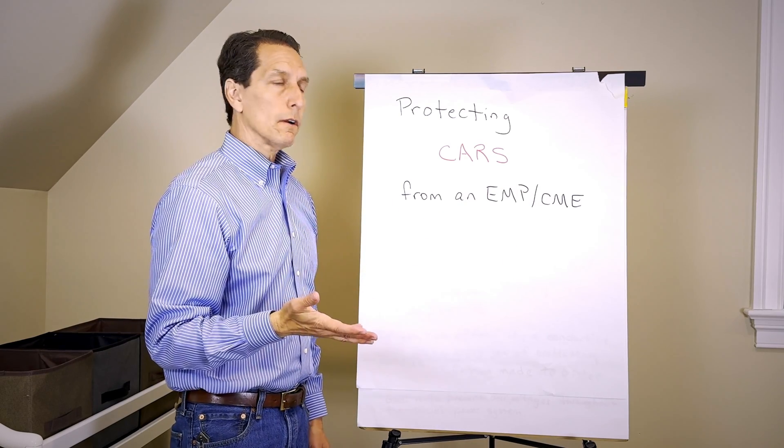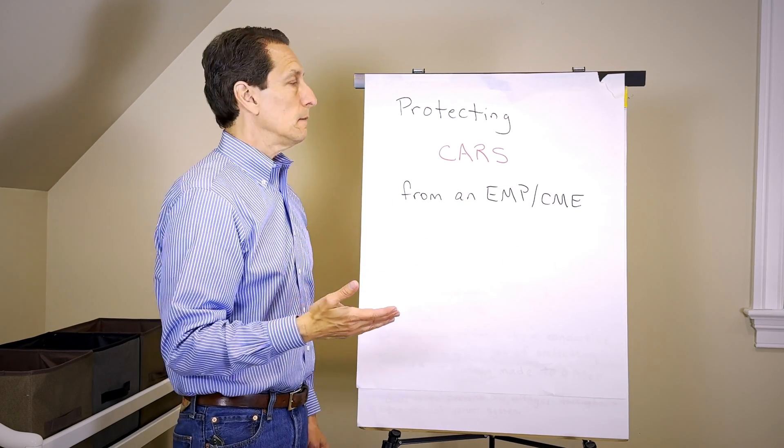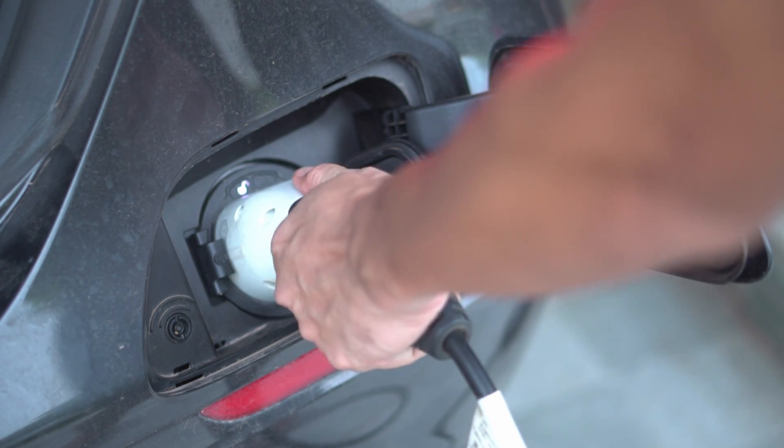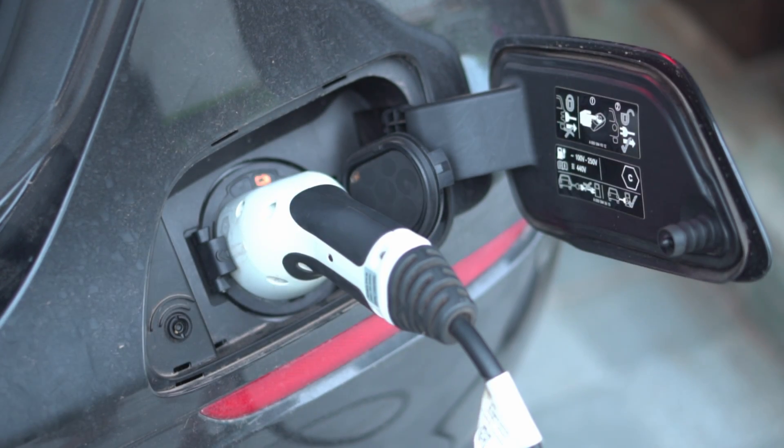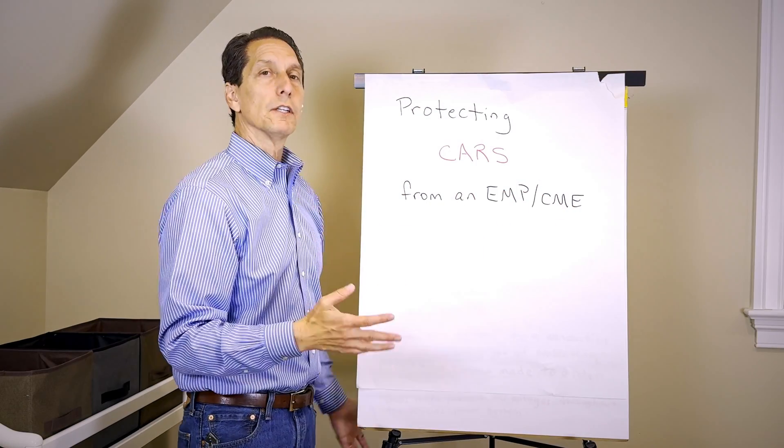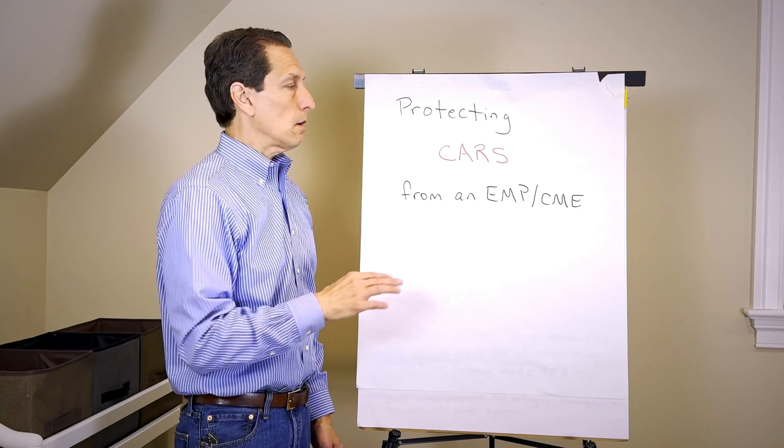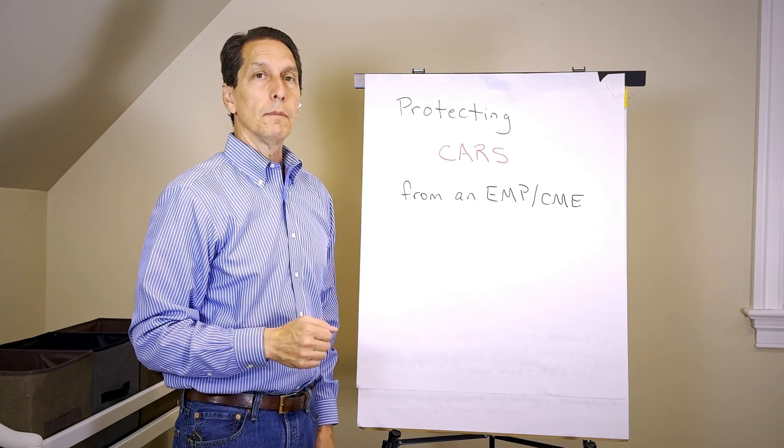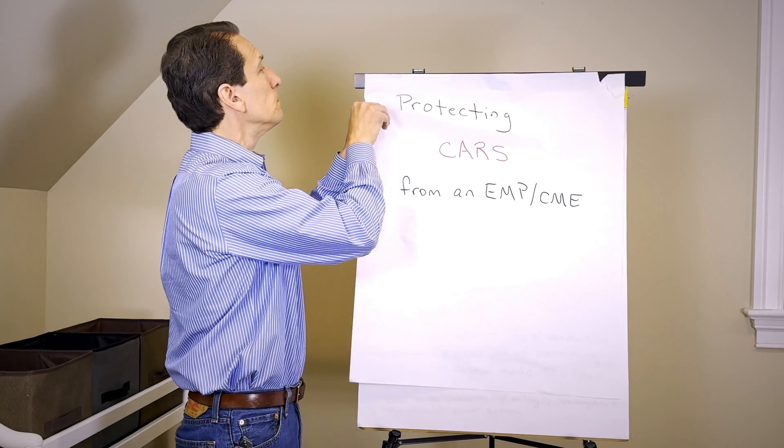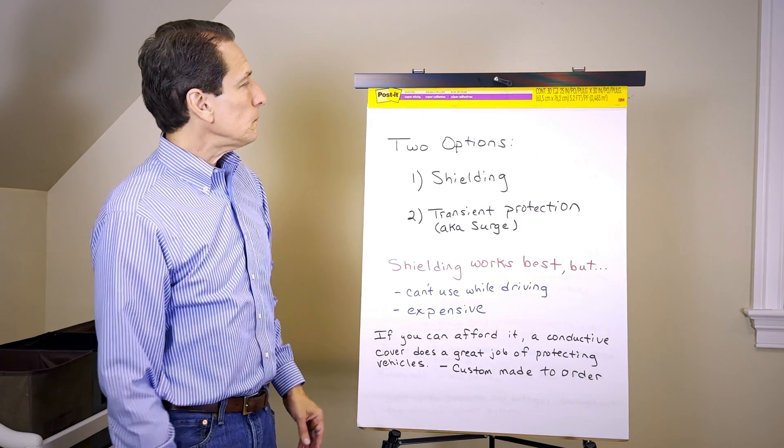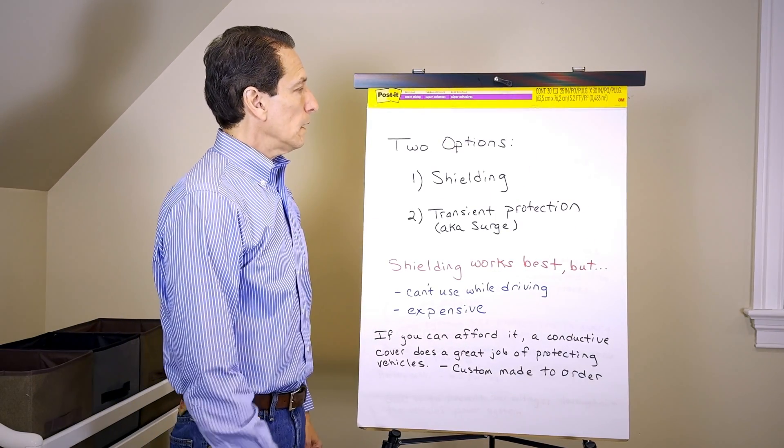A CME, a solar coronal mass ejection, really can't damage your car, so you don't have to take protections against it unless you happen to have an electric vehicle that plugs into the grid. Then there's a lot of energy introduced on the grid from a coronal mass ejection that might feed into your car and cause damage.